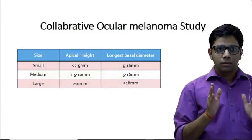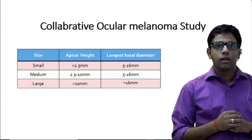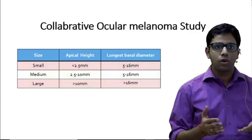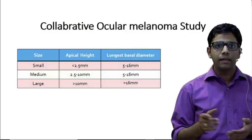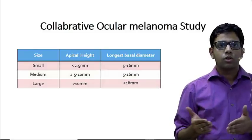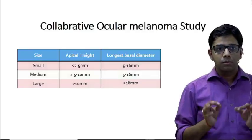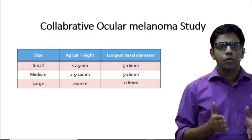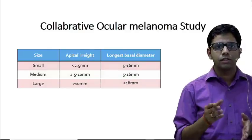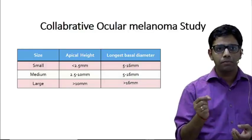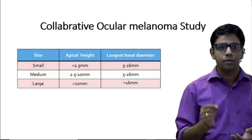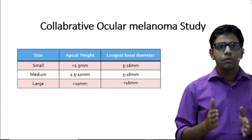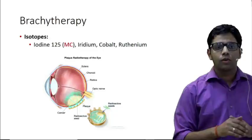After diagnosing choroidal melanoma, treatment is guided by the COMS — Collaborative Ocular Melanoma Study — which divides melanoma into three groups: small, medium, and large, depending on apical height and basal diameter. For very small tumors, the study shows we can sometimes observe whether the tumor is progressing. Features suggesting malignant progression include orange pigments on indirect ophthalmoscopy or absence of drusen — these favor treatment even for small tumors.